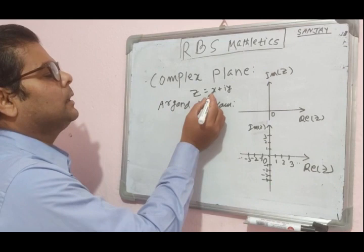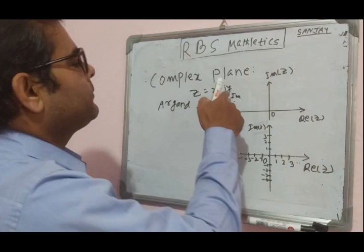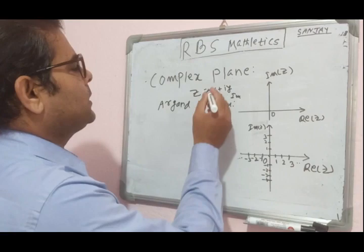In the Argand diagram, x is the real part and y is the imaginary part. The real part is plotted along the x-axis, called the real axis, and the imaginary part y is plotted along the y-axis, called the imaginary axis.